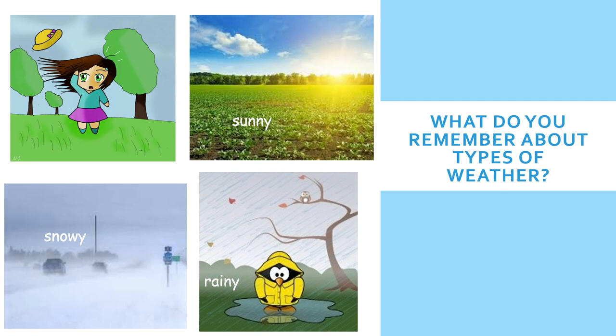Now let's point to a picture that shows it is rainy outside. You got it. I see water on the ground making a puddle. I see a rain jacket and a rain hat. And I see raindrops falling from the sky.